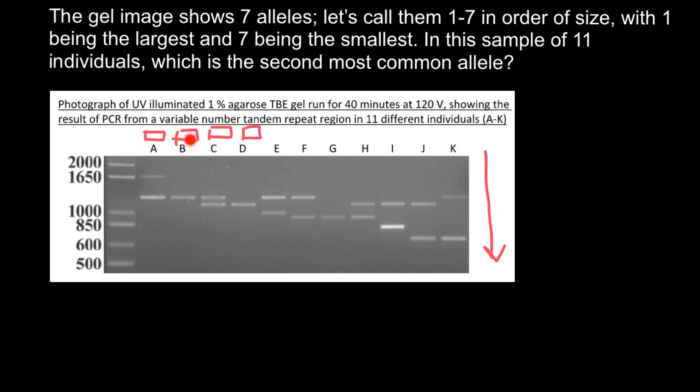Let's count them: one, two, three, four, five, six, seven, eight, nine, ten, eleven. So each letter stands for one person and we are told we have seven alleles. Let's count them.